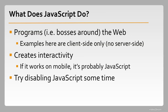Ideally, websites would be built so that JavaScript is not required, because there are a lot of environments where it does not work. That's a technique we call progressive enhancement. But you will certainly see on a lot of modern websites things that just absolutely do not work and are completely inaccessible with JavaScript turned off. So, let's take a look at a few examples.